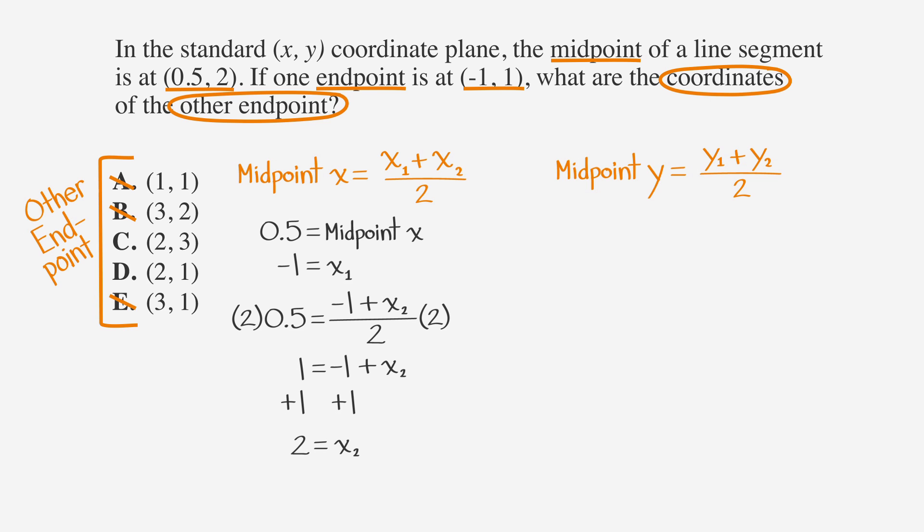You can cross out A, B, and E because they don't have an x value of two, leaving us with answers C and D.